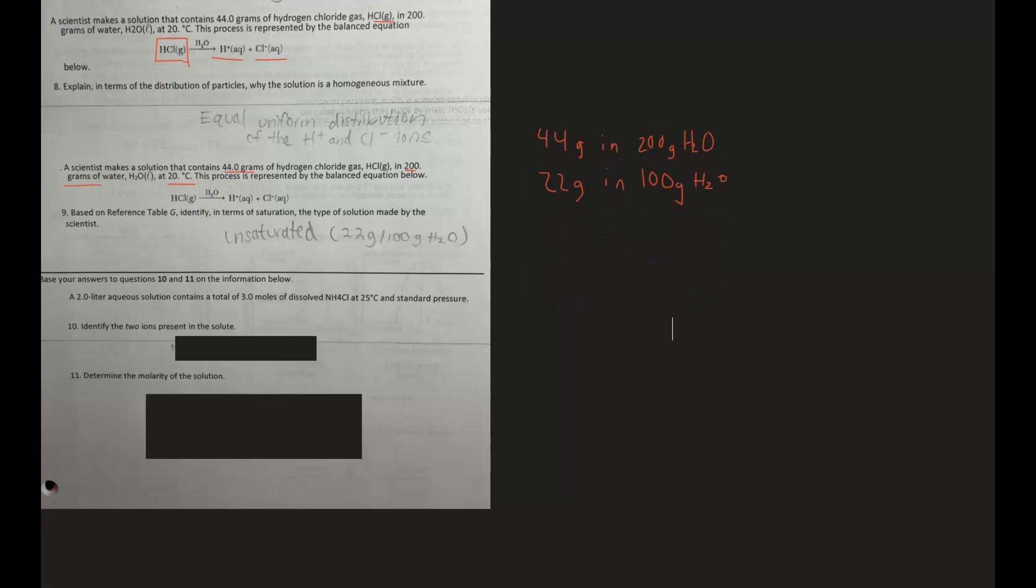So number 10, identify the two ions present in this solute. So what is the solute? Looks like it is three moles of dissolved NH4Cl. So NH4 and Cl. Pretty simple here, we just want to identify the charges on each of these. So NH4, you can find the charge on table E. NH4 is ammonium, which has a positive charge. So our first one is just NH4 plus. And then our second one will be Cl. And I'm assuming this is a balanced equation, so Cl should be negative. And so that is our two ions.